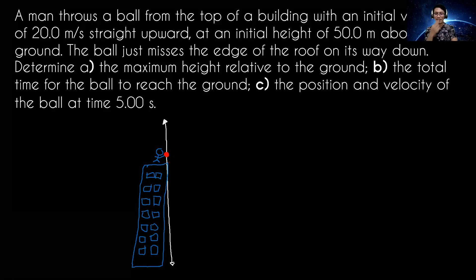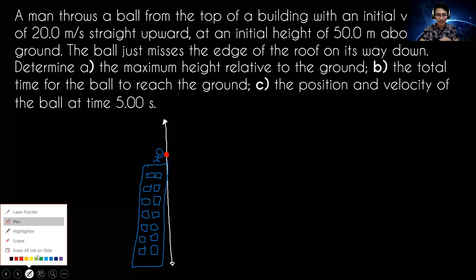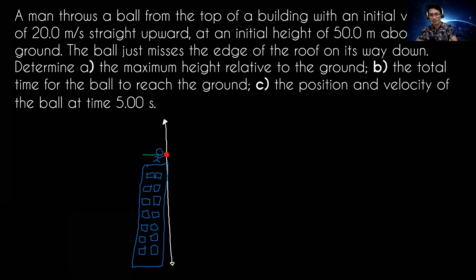This is the start of our motion, the start of our frame of reference. So this man, Galileo, throws a ball from the top of a building. He throws the ball at an initial velocity of what? At a velocity of positive 20.0 meters per second. Why is it positive? Because it's thrown upward. Remember our sign convention. Now, the height from the ground up to here, the displacement, is 50.0 meters.